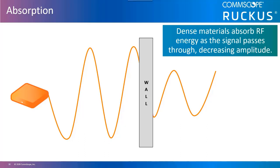For example, drywall has roughly a negative 3 dB impact on RF signals as they pass through the wall.